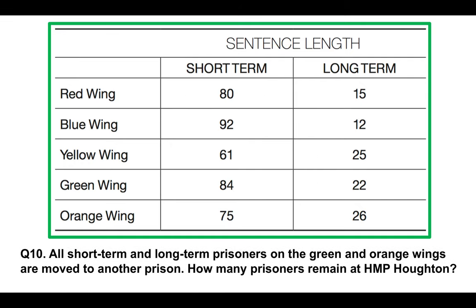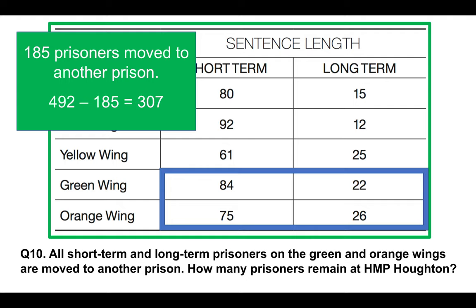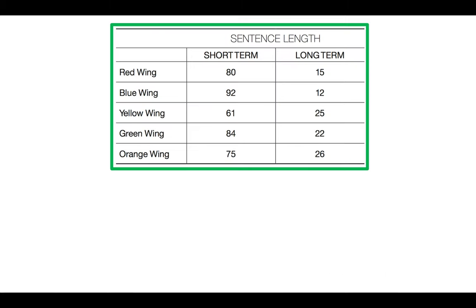Question ten: all short-term and long-term prisoners on the green and orange wings are moved to another prison — how many prisoners remain at HMP Houghton? We work out how many prisoners move, which is those on the green and orange wings — 185 in total. Then subtract from the total: 492 minus 185 equals 307 remaining at HMP Houghton.